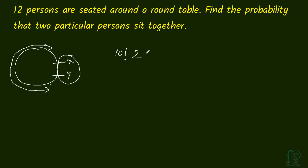These two persons can be arranged in 2 factorial ways. The 10 remaining persons can be arranged in any way, and these two persons are considered as a single unit because they have to sit together. So it will be 10 factorial into 2 factorial as the total number of favorable arrangements.